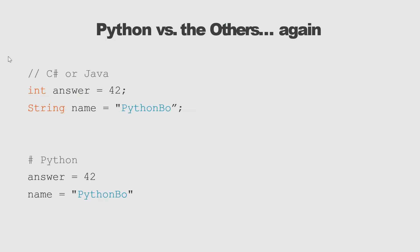If you want to declare an integer in Java, you write 'int answer = 42'. But in Python, you just write 'answer = 42' directly. Some programming languages are strongly typed — every variable you declare must have a type assigned, like C++, C#, and Java. But Python is a loosely typed language, meaning you define a variable without declaring its type and Python will understand it automatically.